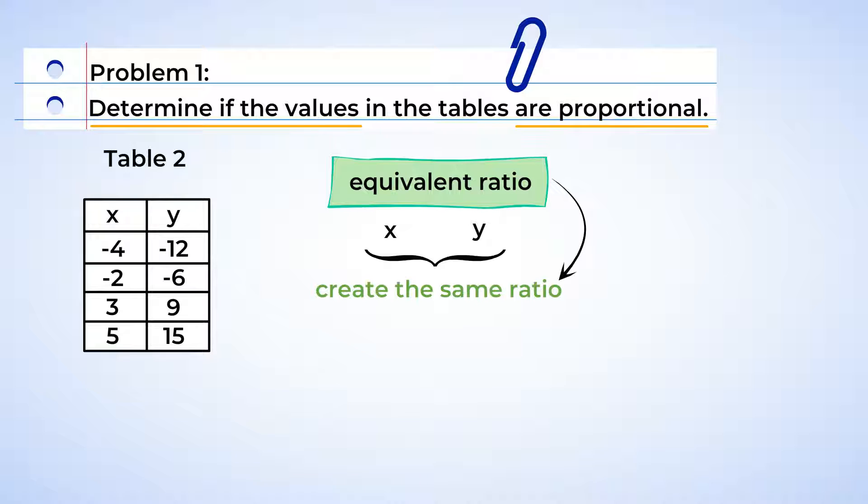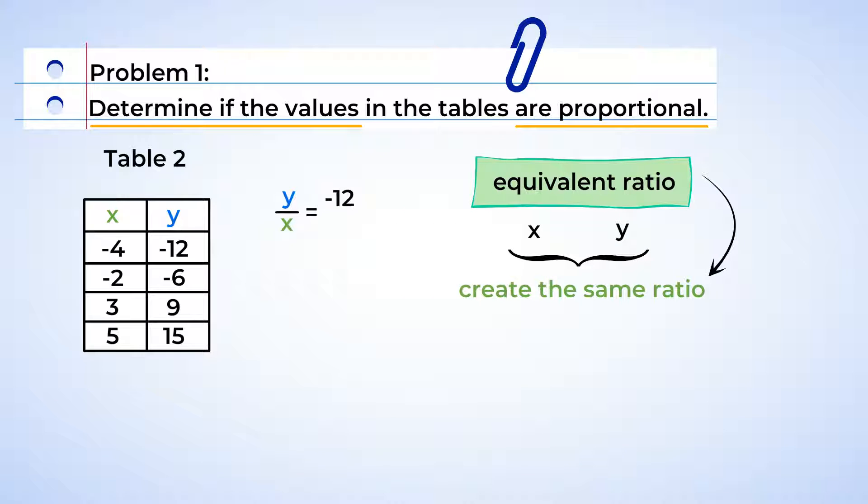Let's start by making a ratio with the first set of values. We will create the ratio by taking the value in the y column and placing it over the value in the x column. Here we go, negative 12 over negative 4. A negative over a negative is equal to a positive, so we can simplify to 3 over 1. We have our first ratio. Let's keep going. Negative 6 over negative 2 also simplifies to 3 over 1. Next row, 9 over 3 is also 3 over 1.